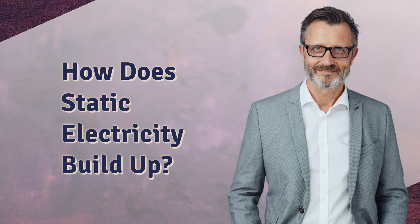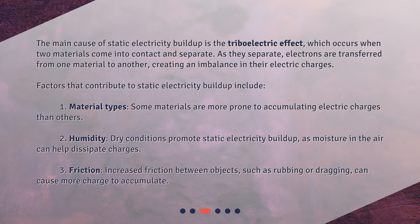How does static electricity build up? The main cause of static electricity buildup is the triboelectric effect, which occurs when two materials come into contact and separate. As they separate, electrons are transferred from one material to another, creating an imbalance in their electric charges.